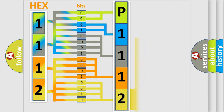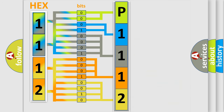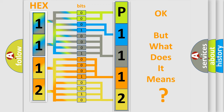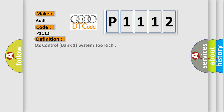A single byte conceals 256 possible combinations. We now know in what way the diagnostic tool translates the received information into a more comprehensible format. The number itself does not make sense to us if we cannot assign information about what it actually expresses. So, what does the diagnostic trouble code P1112 interpret specifically for Audi car manufacturers? The basic definition is O2 control, bank one, system two rich.